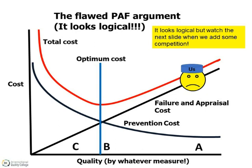However, the advocates of this model then suggest that continued and progressive reductions in quality costs will eventually lead to a situation where an optimum value is reached, beyond which the cost of further prevention efforts will outweigh the benefits. Hence, the overall cost will rise. For example, in this figure, the company would move from position A through position B to position C.